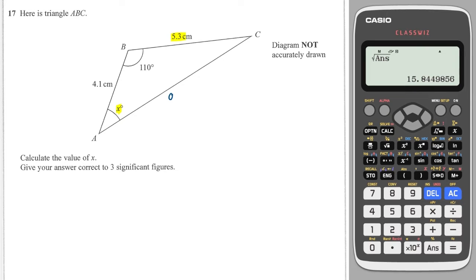So I'm going to use the cosine rule to work out A. I'll call this one the angle opposite and I will do that by doing A squared is equal to 4.1 squared plus 5.3 squared minus two times 4.1 times 5.3 times cosine of 110.